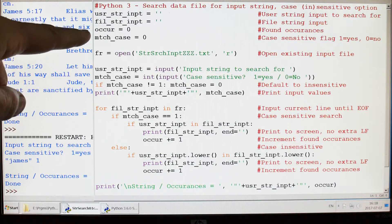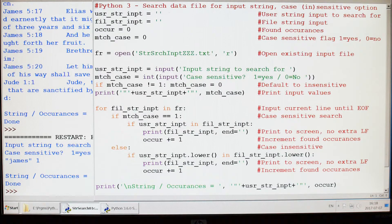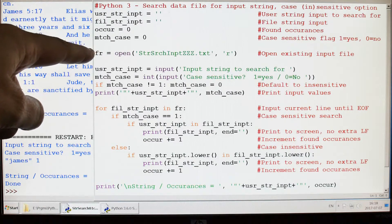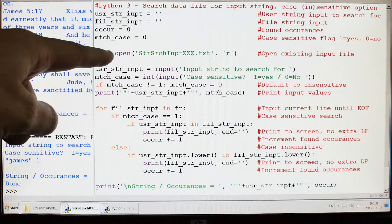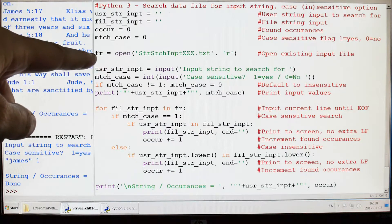The occurrence is the number of occurrences found and the match case is a flag that says how many times it found this in the file. The next thing is the name of the file down here, so we're going to open this file called StringSearchInputZZ.txt as a read.